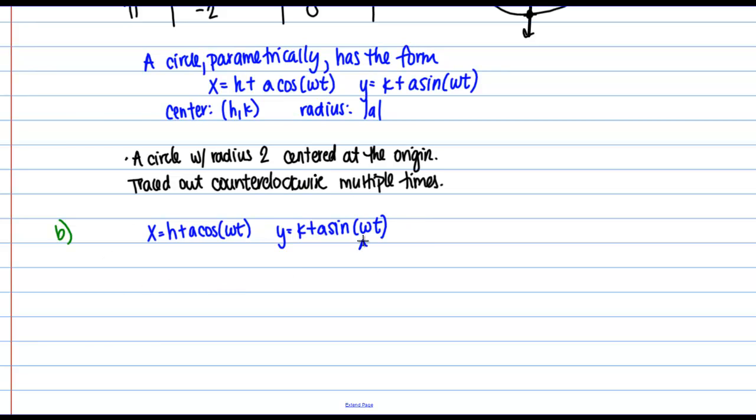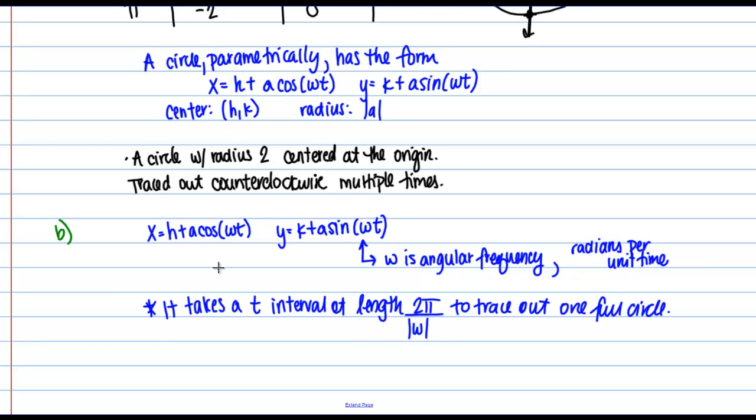So here we need to know a little bit more detail about these parametric equations of the circle. So we have this ω that we see here in both of these equations. H plus A cosine ωt, K plus A sine of ωt. ω is what we call the angular frequency, or we can think of that as the radians traced out per unit time. So here's a useful fact.